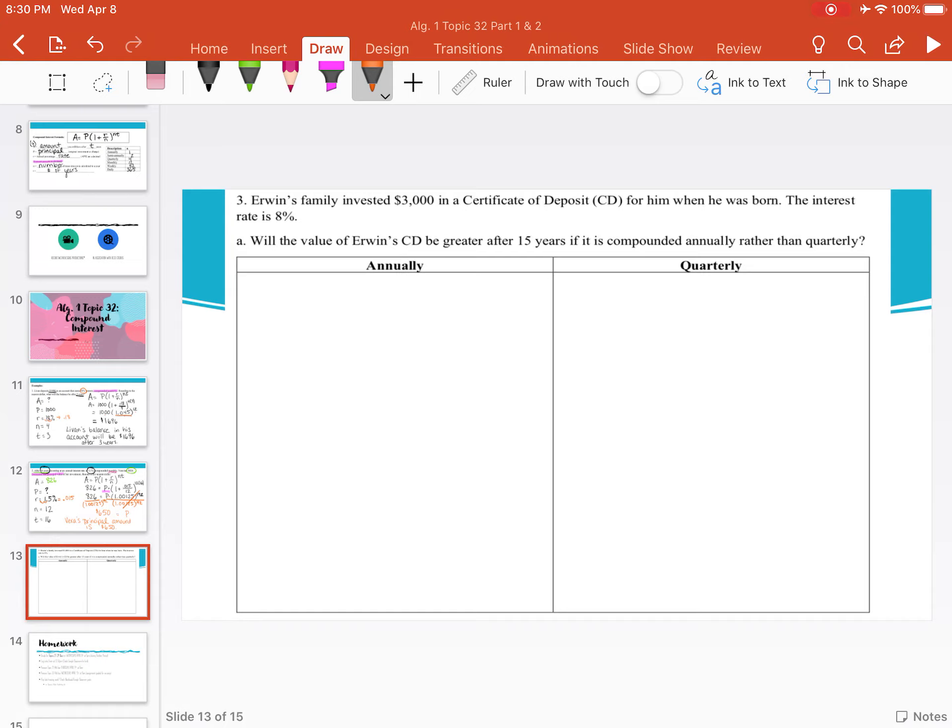Now the question says, will the value of Irwin's certificate of deposit be greater after 15 years if it is compounded annually rather than quarterly? So we're doing a comparison. We have all the same values, except the only values that will change will be our n values, the number of times the interest is calculated in the year.